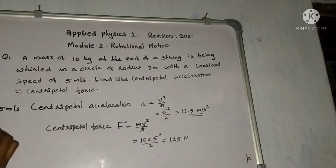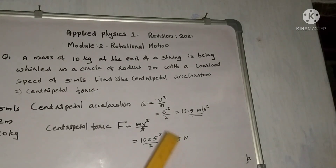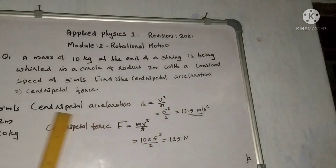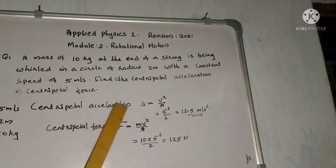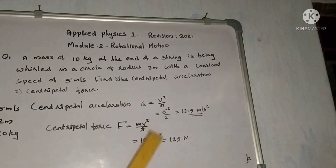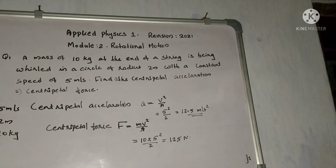Radius is equal to 2 m and mass is equal to 10 kg. The result is 125 Newton.